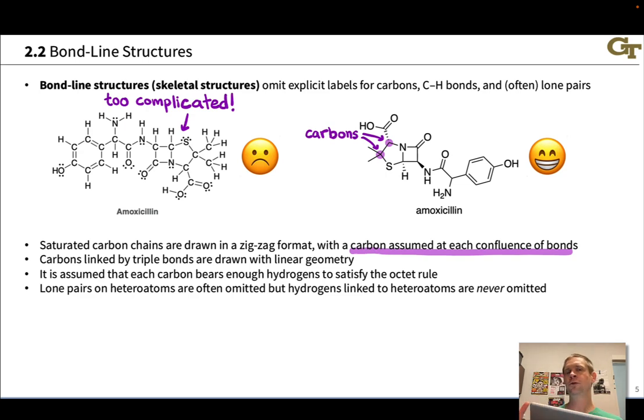The geometry in bond line structures is also closer to the sort of nature accurate geometry. For example, 109.5 degree bond angles at tetrahedral carbon. Carbons linked by triple bonds are typically drawn with linear geometry because that is their actual geometry in the true molecule. That's just VSEPR theory at work.